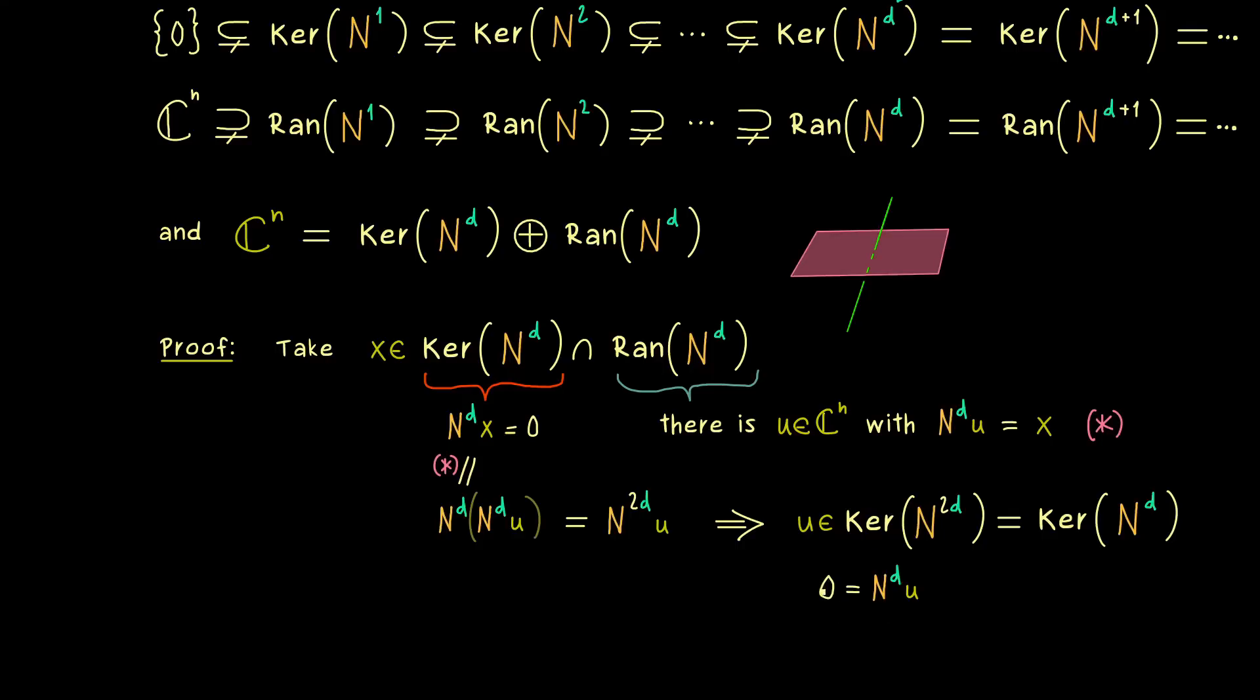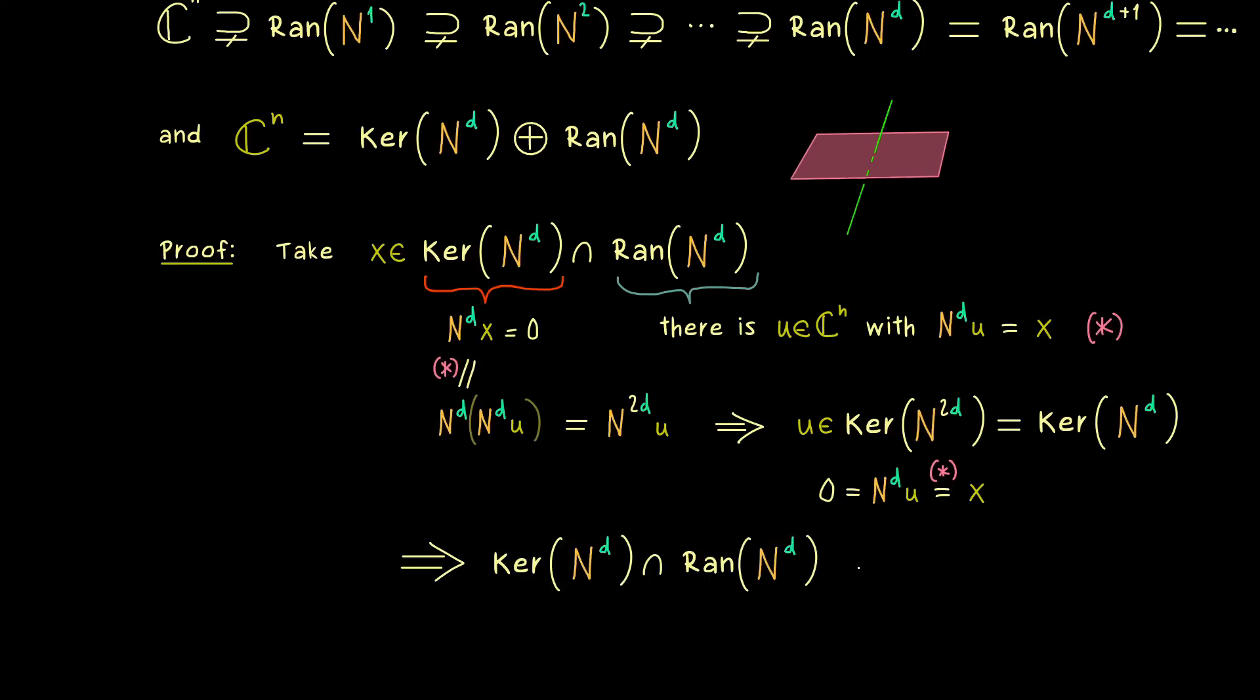And now at this point we can use the definition of our u, which tells us that N to the power d u is equal to x as well. So the conclusion is that x was zero all along. And this is what we wanted to show. It means that the intersection here is trivial. So in fact, it's allowed to write the direct sum between both subspaces.